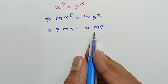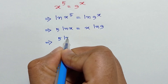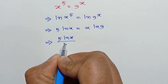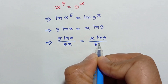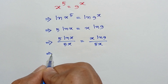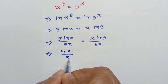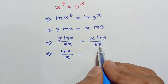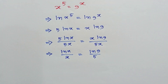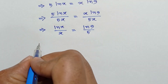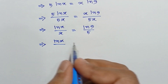Dividing both sides by 5x we can write 5 ln x over 5x is equal to x ln 9 over 5x. The 5 and 5 cancel out, and the x and x cancel out, so it becomes ln x over x is equal to ln 9 over 5.